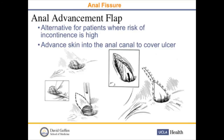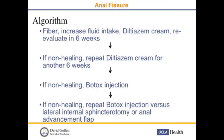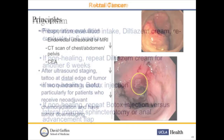The algorithm is: fiber and increased fluid intake, then diltiazem cream, re-evaluate in six to eight weeks. If non-healing, repeat the cream for another six to eight weeks. If still non-healing, Botox injection. And if non-healing after that, repeat Botox injection versus sphincterotomy or anal advancement flap.